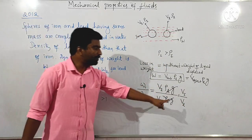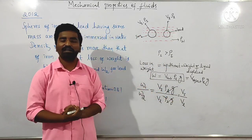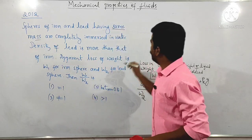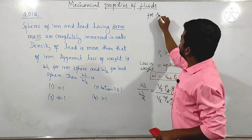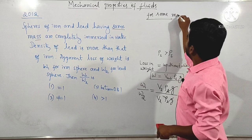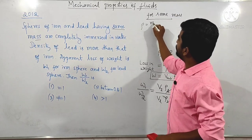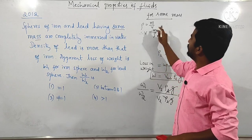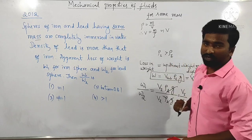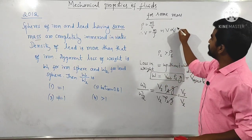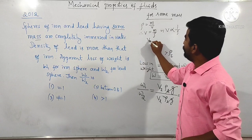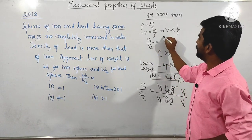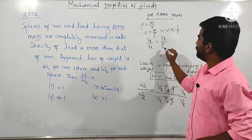But the condition given in the question is that they have the same mass. We know that density equals mass divided by volume, therefore volume equals mass divided by density. For the same mass, volume is inversely proportional to density. So volume of iron to volume of lead is inversely proportional — that is, density of lead to density of iron.